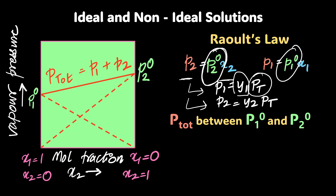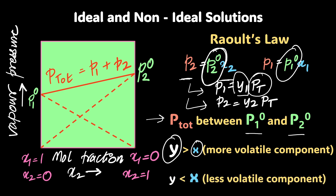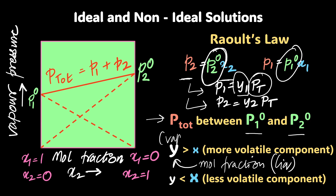Important inferences from this graph: the total pressure always lies between the solvent and solute pure vapor pressures. For the more volatile component, the mole fraction in the vapor phase is always greater than in the liquid phase; for the less volatile component it's the other way around. X is the mole fraction in the liquid phase, Y is the mole fraction in the vapor phase. Component two is clearly more volatile here because it has a higher pure vapor pressure.